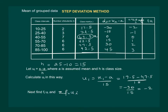Next we have to find Fi times UI. Now it becomes very easy. 2 times minus 2 is minus 4. 3 times minus 1 is minus 3. 0. 1 times 6 is 6. 2 times 6 is 12. And 3 times 6 is 18. Summation Fi·UI will be equal to 29.